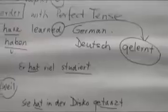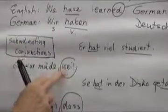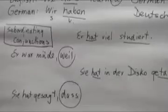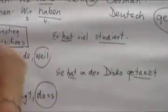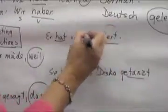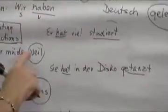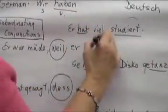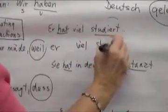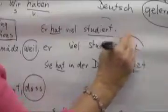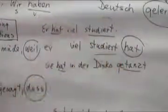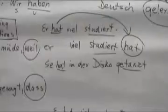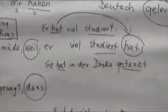We also learned subordinating conjunctions, and we learned that when a subordinating conjunction is used — like 'weil,' 'dass,' or 'obwohl' — the conjugated verb goes to the end. So let's see what happens. I gave you the original sentence: 'er hat viel studiert.' It's one of the -ieren verbs, that's why it has no 'ge-' prefix. He has studied a lot. Now let's add a 'while': he was tired because he has studied a lot — 'Weil er viel studiert hat.' Remember, 'haben' is the conjugated verb, so that goes to the end. Nothing has changed; it's just that we have a past participle to deal with now too.